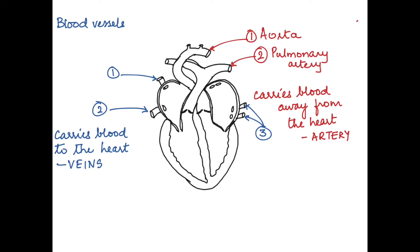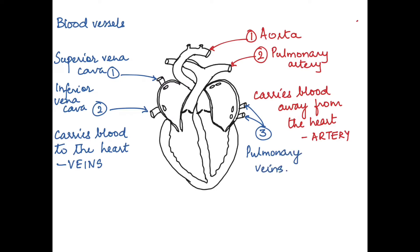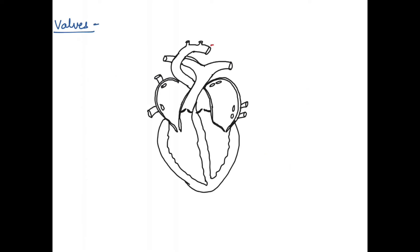The aorta carries blood to all parts of the body, and the pulmonary artery carries blood to the lungs. We have the superior and inferior vena cava that bring blood from the body parts, and the pulmonary veins that bring blood from the lungs. Next we identify the valves.